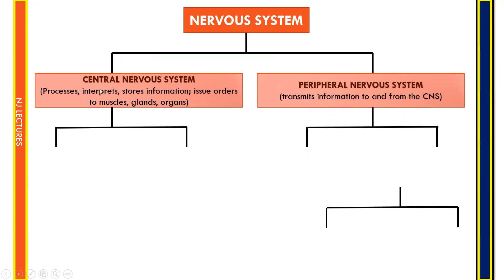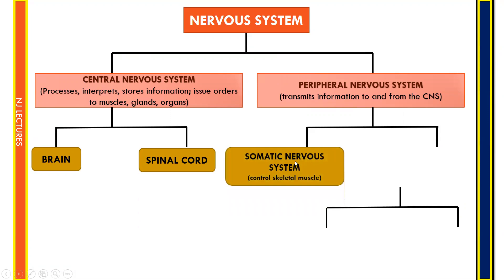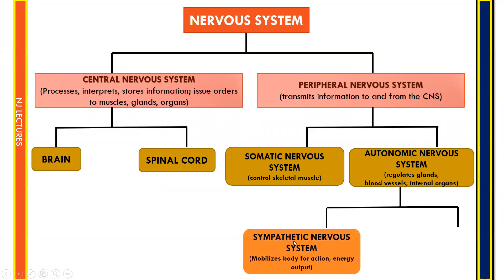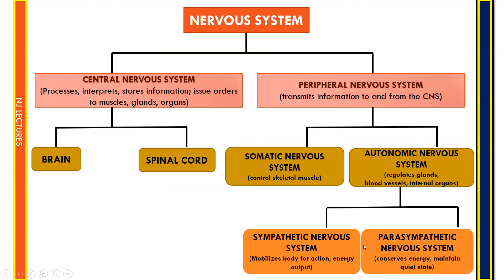The central nervous system consists of the brain and spinal cord, whereas the peripheral nervous system consists of the somatic nervous system, which controls skeletal muscle, and the autonomic nervous system, which mainly regulates glands, blood vessels, and internal organs. The autonomic nervous system is divided into the sympathetic nervous system, which mobilizes the body for action and energy output, also called the adrenergic nervous system, and the parasympathetic nervous system, also called the cholinergic nervous system, which conserves energy and maintains a quiet state.